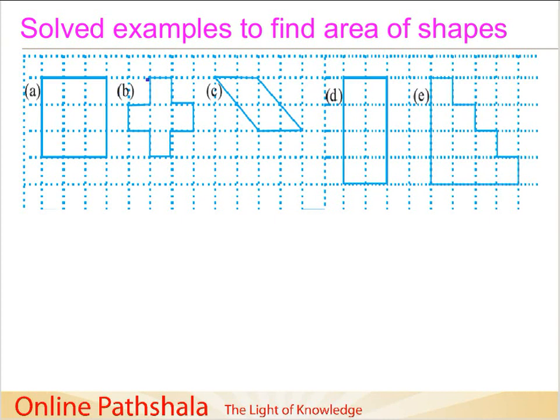Okay, so now let us try to find out areas of the shapes that are given below. The assumption here is that these shapes that we have here, A, B, C, D and E, they are already placed on a grid which is 1 cm by 1 cm, on a square grid of 1 cm by 1 cm. It is an imaginary grid.